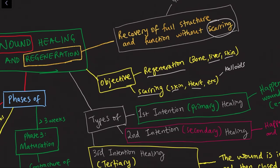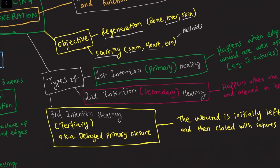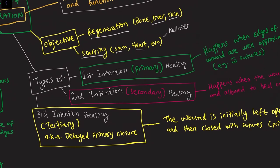There are three types of wound healing. First intention wound healing, also known as primary healing. Second intention wound healing, also known as secondary healing. And third intention wound healing, also called tertiary or delayed primary closure.